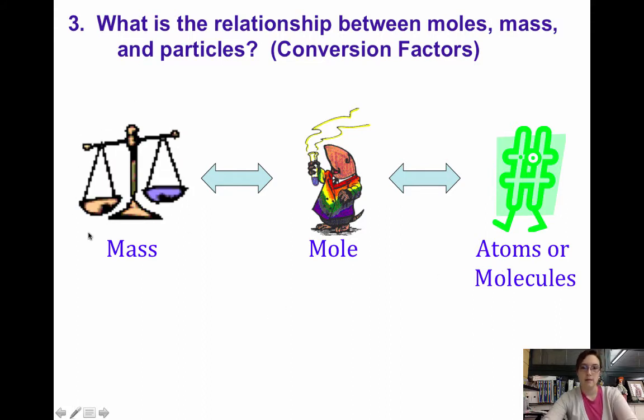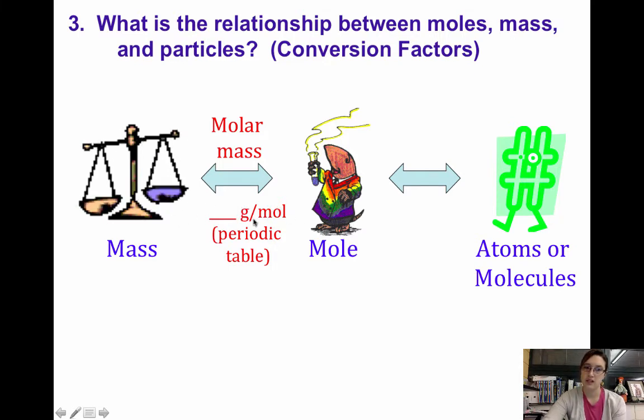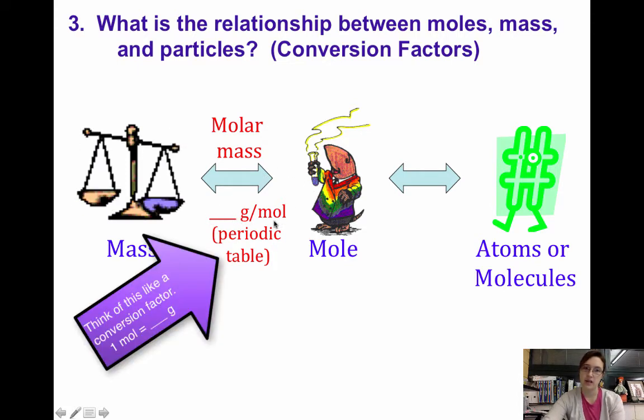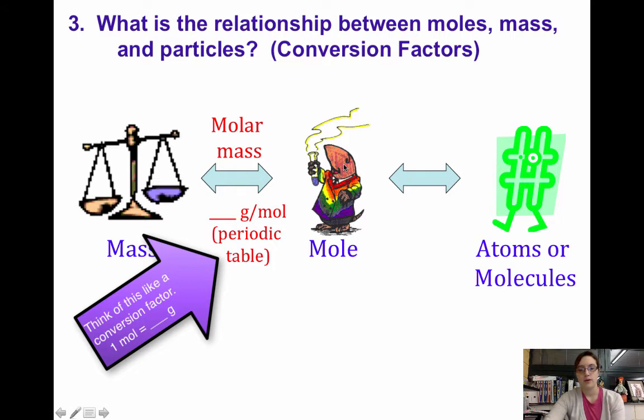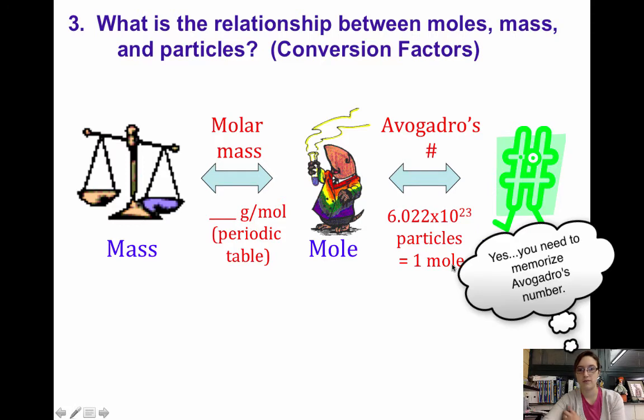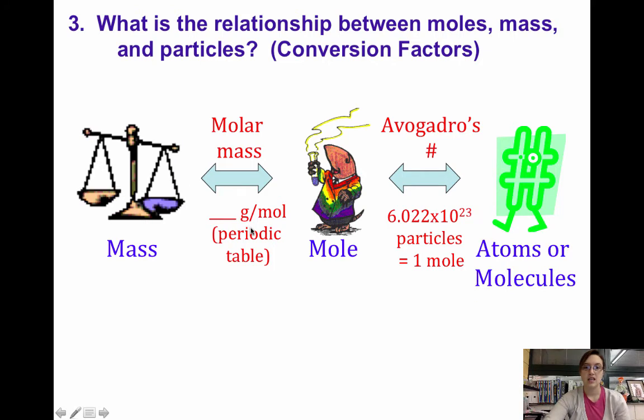So to go from mass to moles, so grams to moles, we use molar mass. Because the molar mass is the conversion factor that we use. For one mole of a substance, you have the molar mass in grams. So that's actually the conversion factor that we can use. If you want to go between moles and atoms or molecules, we're going to use what's called Avogadro's number. And that is 6.022 times 10 to the 23rd particles equals one mole. So when it comes to doing conversion factors or conversion problems, these two numbers down here are our conversion factors.